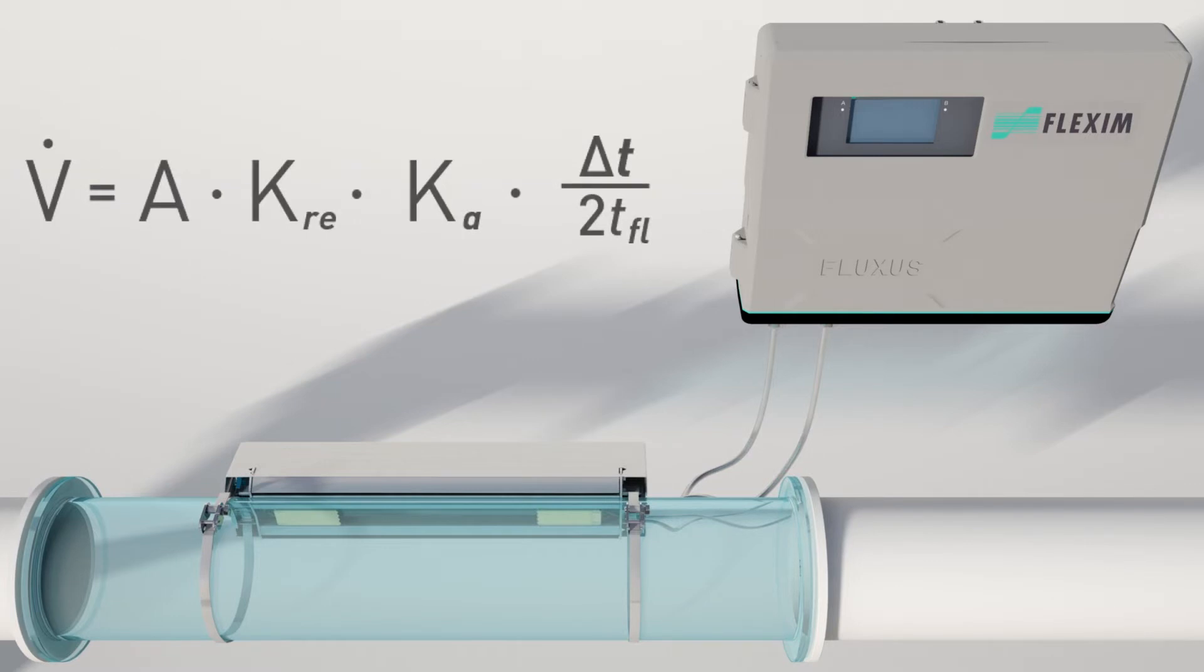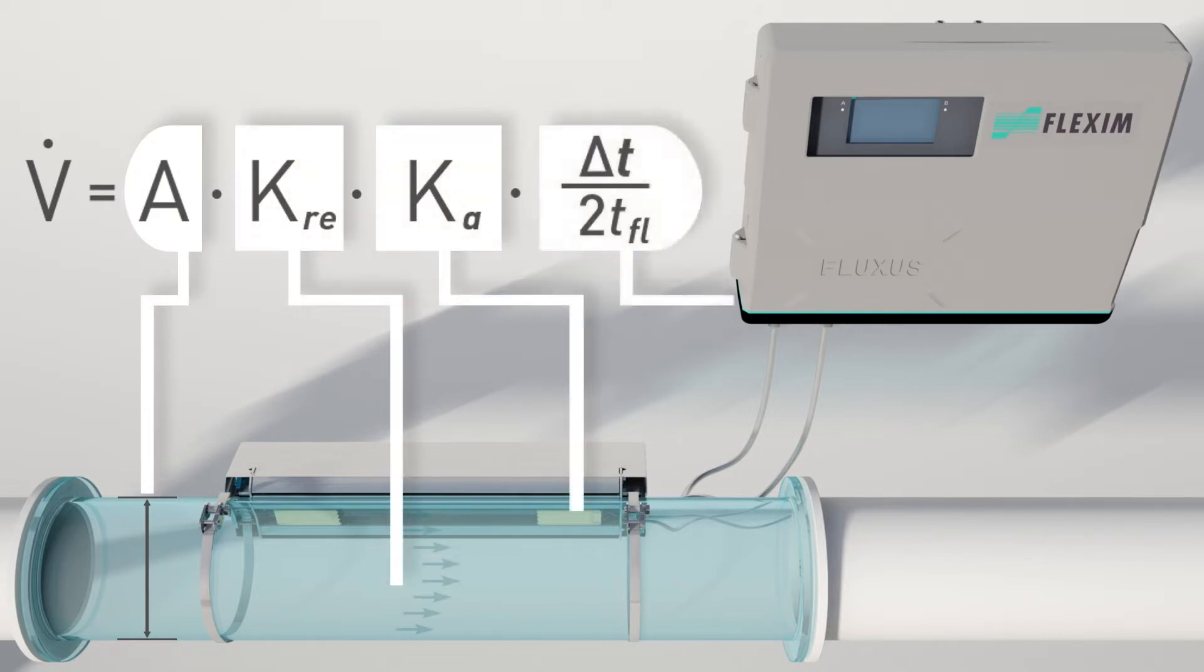The volume flow is calculated using the pipe cross-sectional area, the flow profile factor, the transducer constant, and the measured transit times.